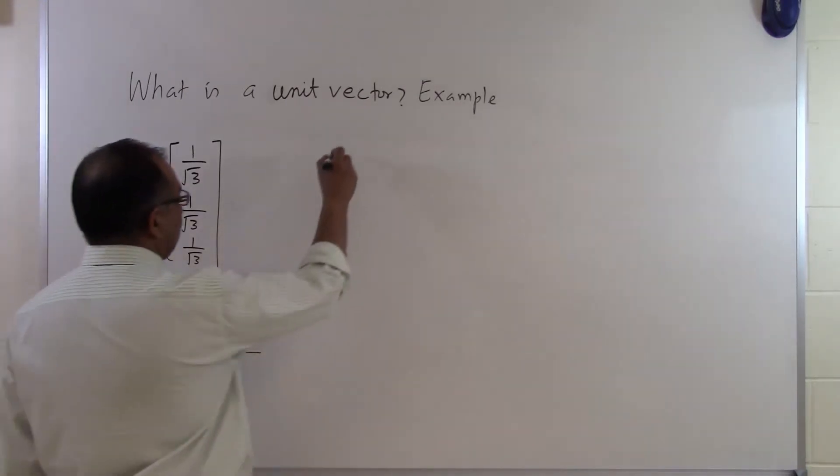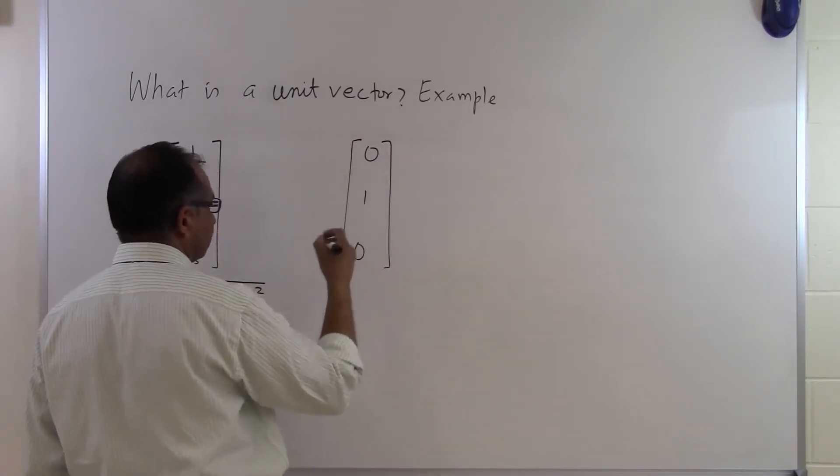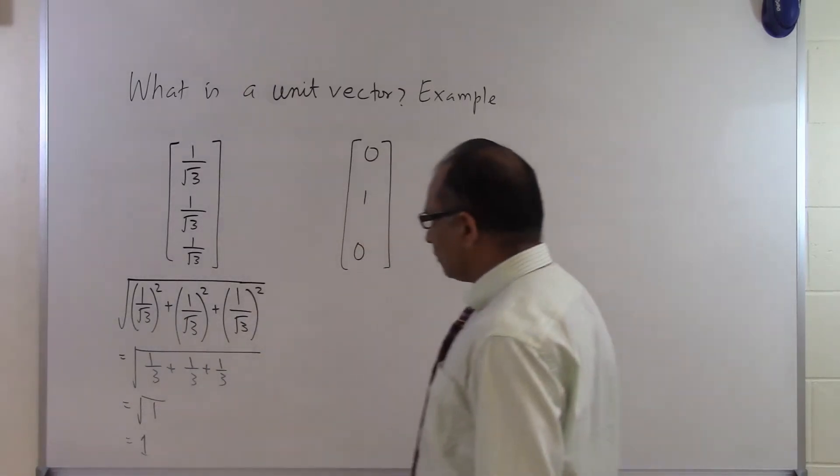Another example of a unit vector can be 0, 1, 0. A three-dimensional column vector which is a unit vector is like 0, 1, 0.